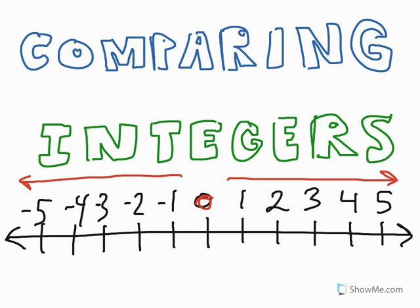When you're comparing integers, the greater values are always further to the right, and the lesser values always on the left side. So all positive integers are greater than negative integers.